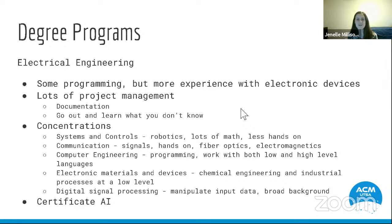These concentrations are all listed in the course catalog for UTSA. The first concentration is systems and controls, which deals a lot with robotics. Surprisingly, it's a lot more math and calculations of how systems work than hands-on experience. The second concentration is communications, which studies how signals get passed between devices. Unlike systems and controls, this one is a lot more hands on — you'll gain knowledge in signals, fiber optics, and electromagnetics. So if you're interested in how devices communicate with each other, that might be for you.